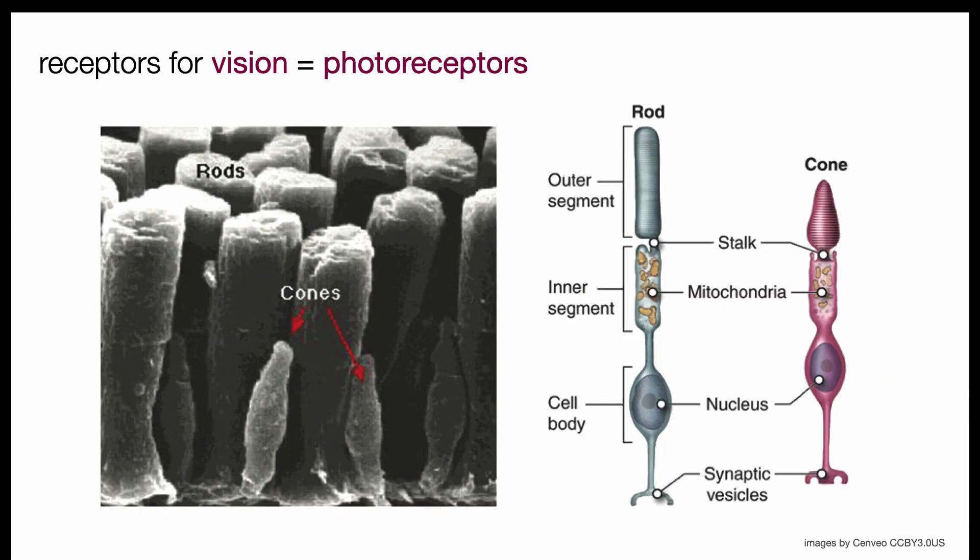For example, the sensory receptors for vision are photoreceptors. There are two types of photoreceptors in the eye, rods and cones, named for their relative shapes.